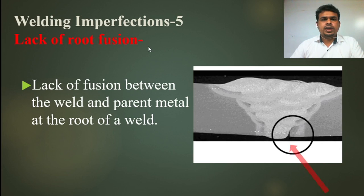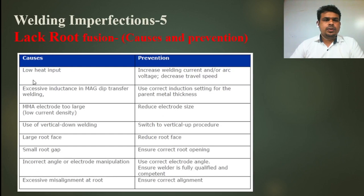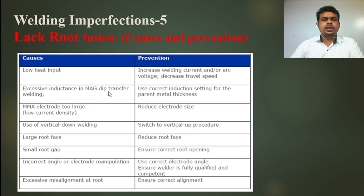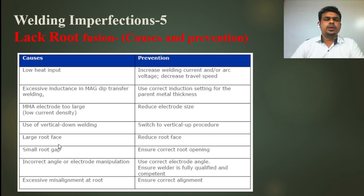You can see in the picture what lack of root fusion looks like. The causes and prevention: low heat input — increase welding current and arc burn rate, decrease travel speed. Excessive inductance in MIG dip transfer welding — use correct inductance setting for the parent metal thickness. MMA electrode too large with low current density — reduce electrode size. Use of vertical down welding — switch to vertical up procedure. Large root gap — reduce the root gap. Small root gap — ensure correct root opening. Incorrect electrode angle or manipulation — use correct electrode angle and ensure the welder is fully qualified and competent.